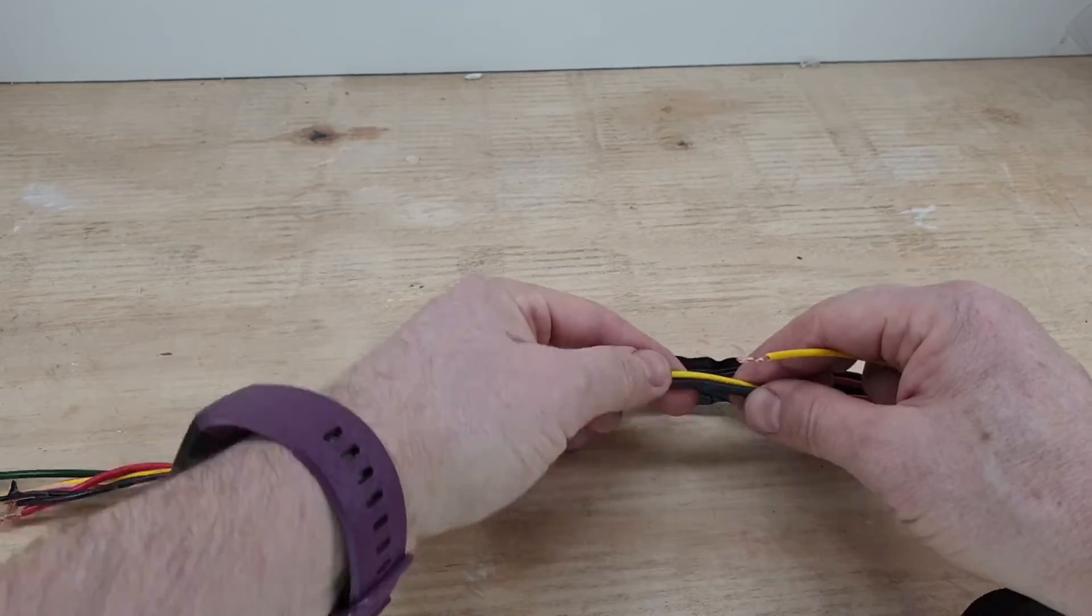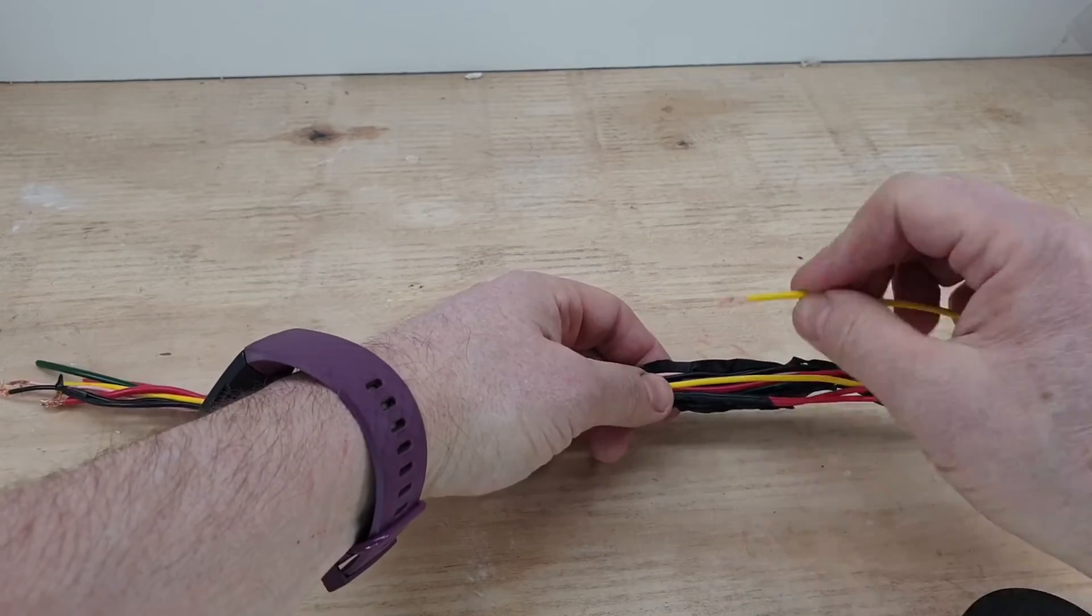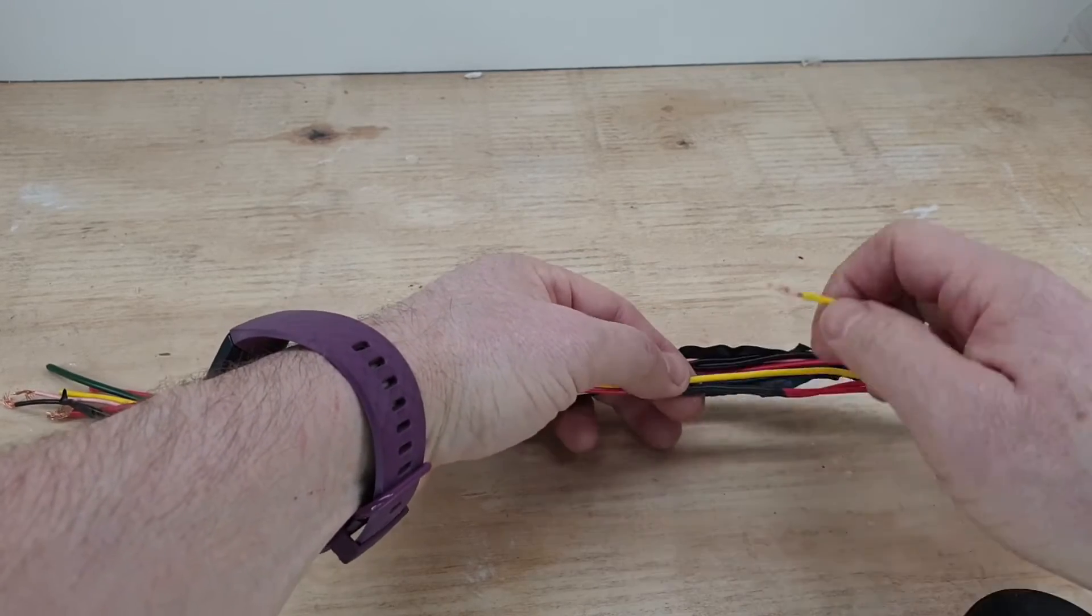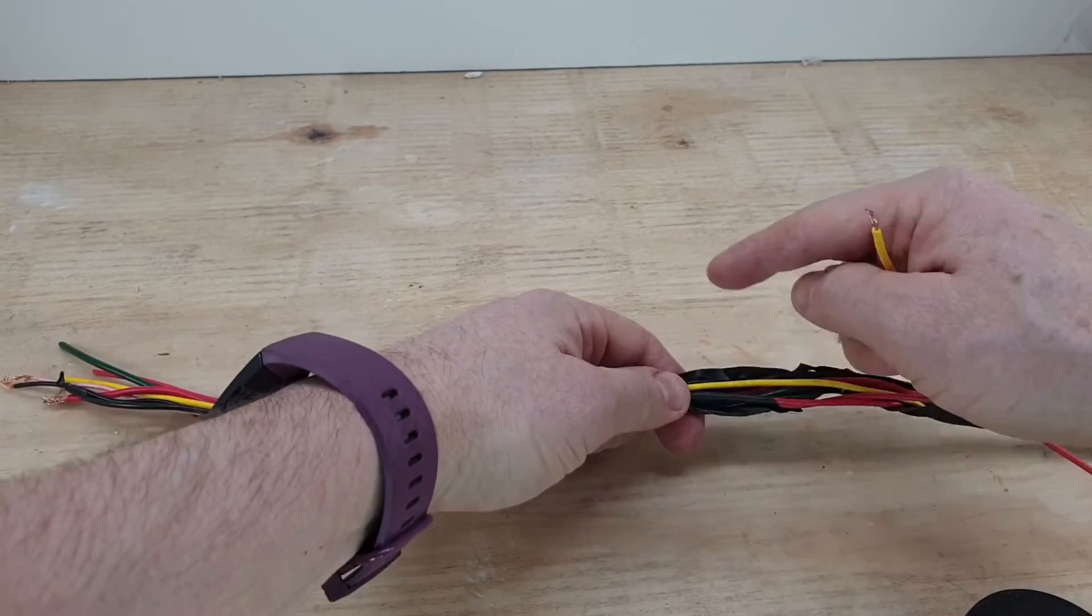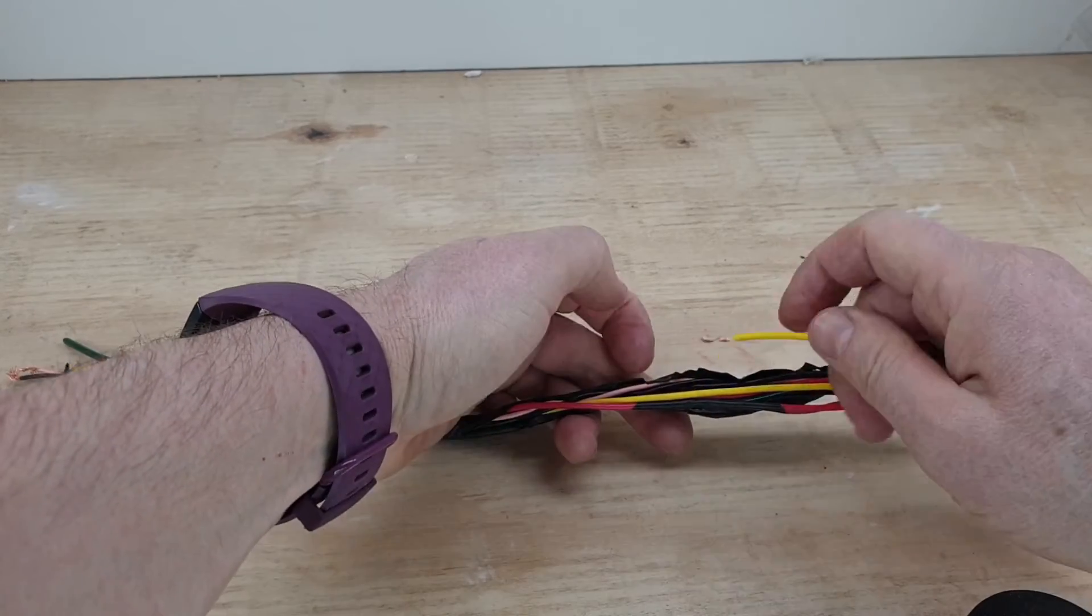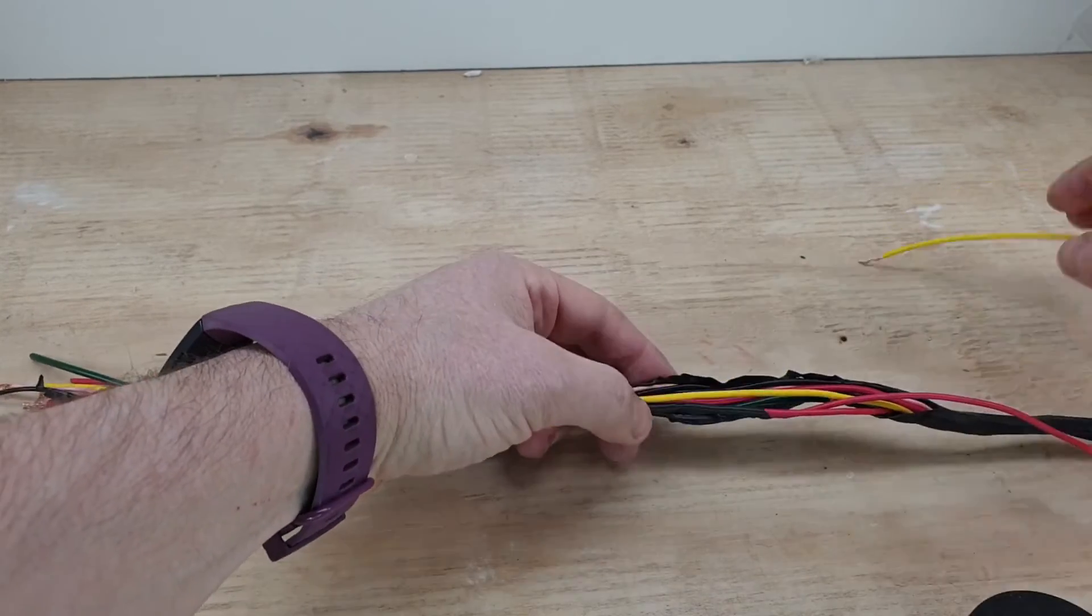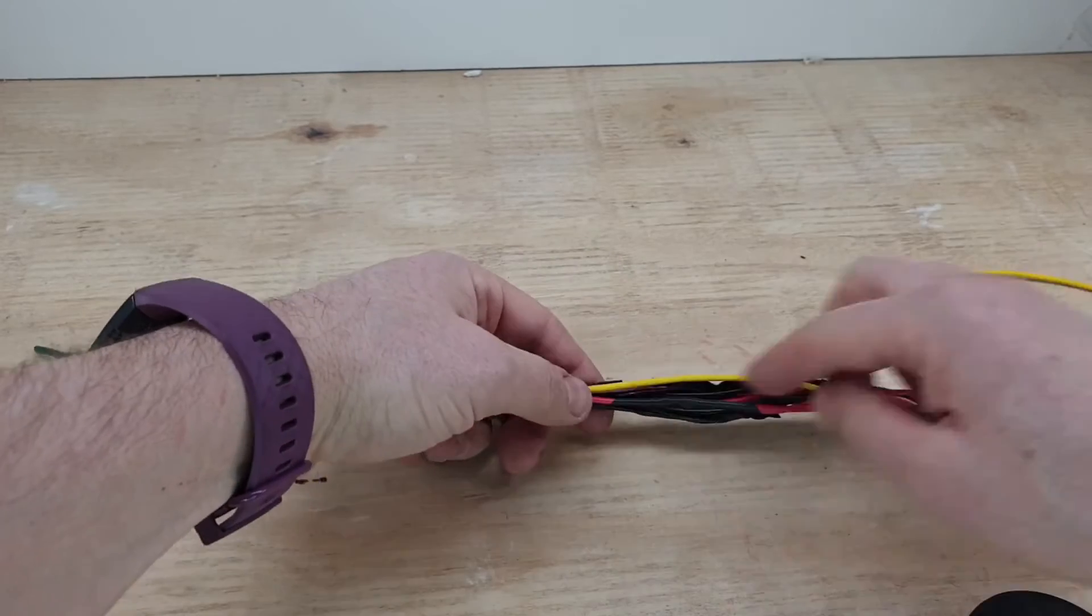Otherwise what you'll end up with is when you're insulated, one, you run the risk of them squishing together and shorting out where they're soldering there. But then you have this big sort of knot. Whereas if you space it out a little bit, the whole thing will just sit in there better, look nicer.